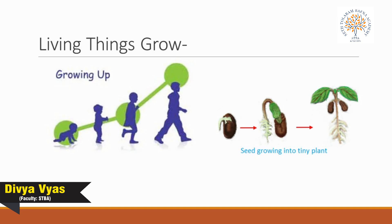All animals have an adult size up to which they grow. Plants keep growing new branches or leaves as long as they live. A small plant grows into a big mango tree over time, and a similar growth happens in other plants as well.